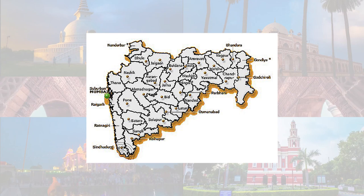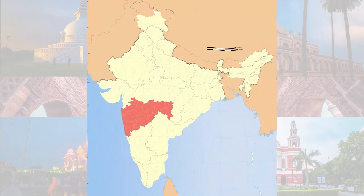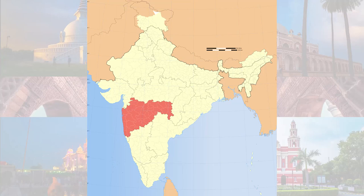Nasik is well-known as the wine capital of India and has the largest number of wineries and vineyards in the country. Maharashtra, the most industrialized state in the country, is located in the western regions of India with a gross state domestic product of Indian rupees 24.97 lakh crores. Maharashtra is the largest economy in India and accounts for 15.01% of the country's GDP in 2017-18.